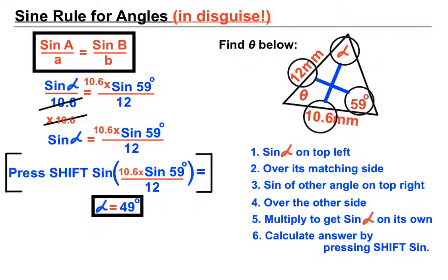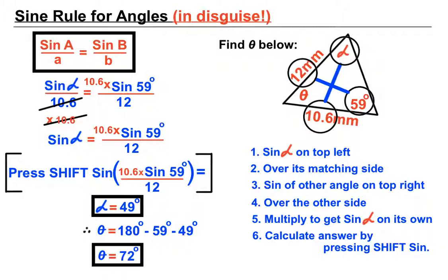We get alpha equals 49 degrees — slightly smaller, as expected. Now we have two out of three angles: 59 and 49. Using the angle sum: 180 minus 59 minus 49 gives us theta equals 72 degrees. So it wasn't a classic sine rule setup, but by finding alpha first and then using the angle sum of a triangle, we could still find theta.